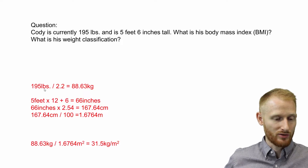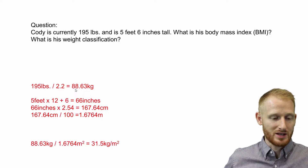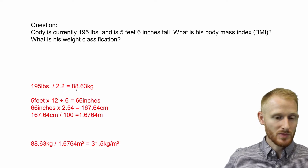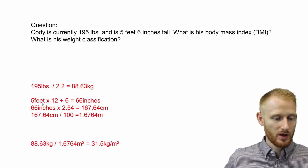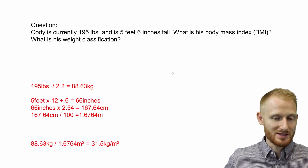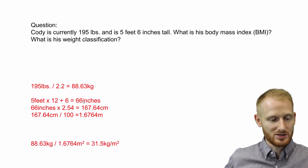We're going to take 195 pounds and divide that by 2.2 to get 88.63 kilograms. For the height, we take five feet, multiply by 12 to get it into inches, then add the six because it's five foot six, and that gives us 66 inches.